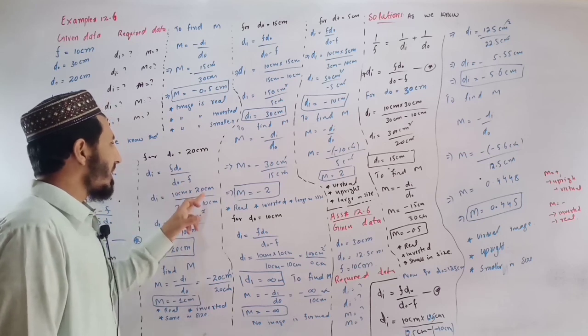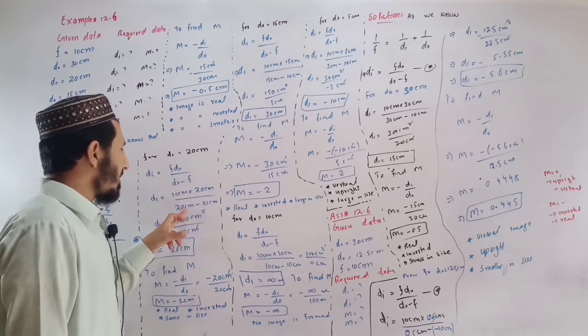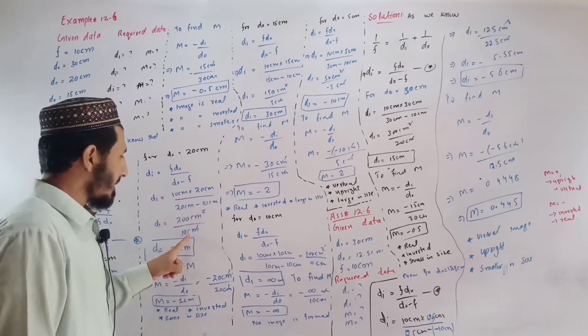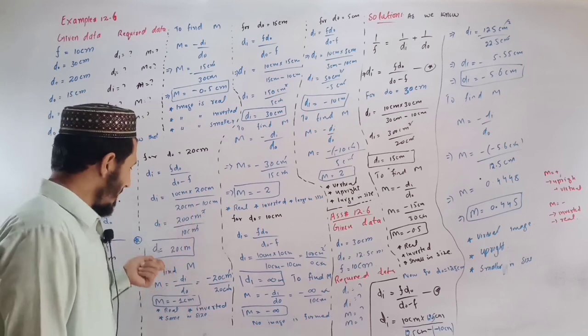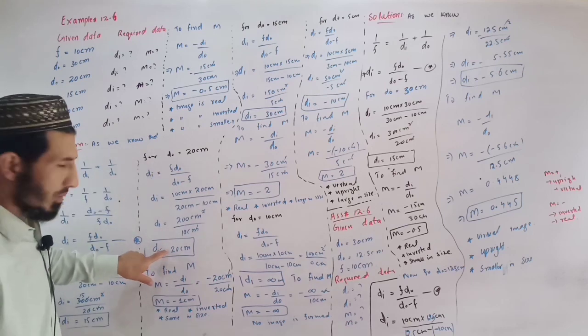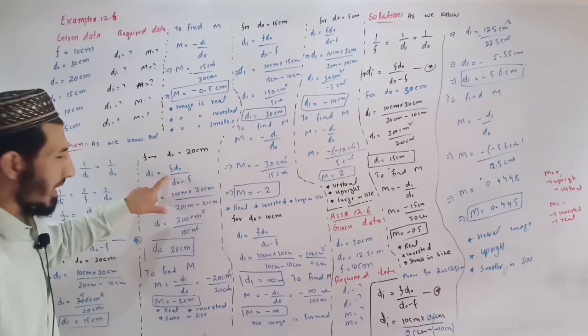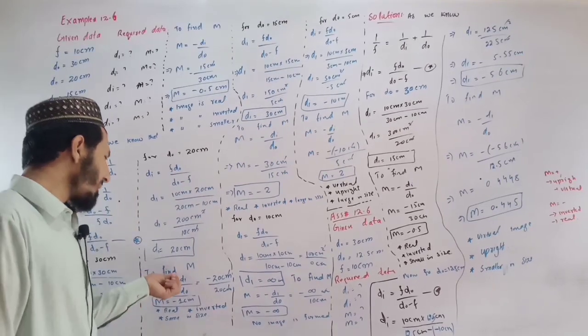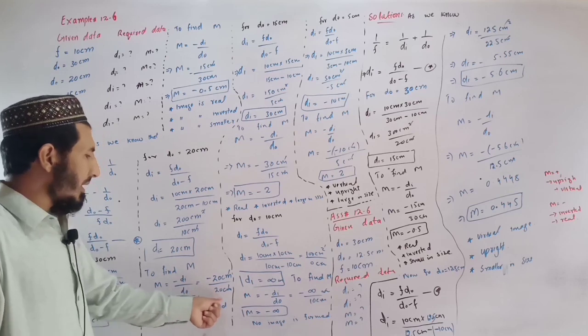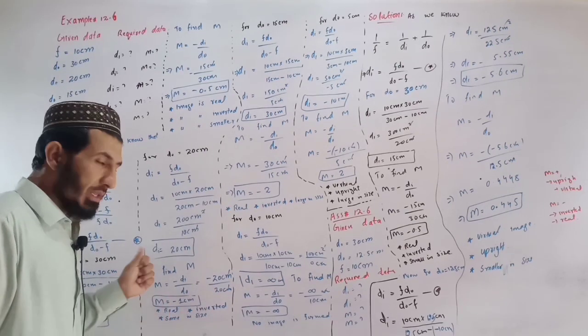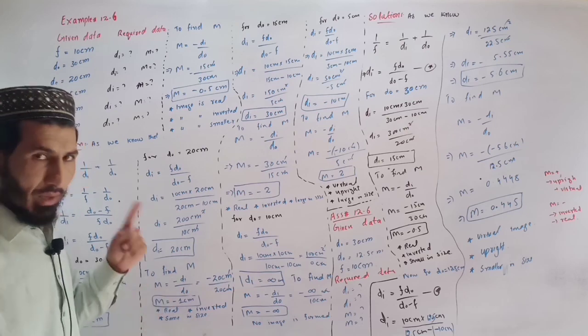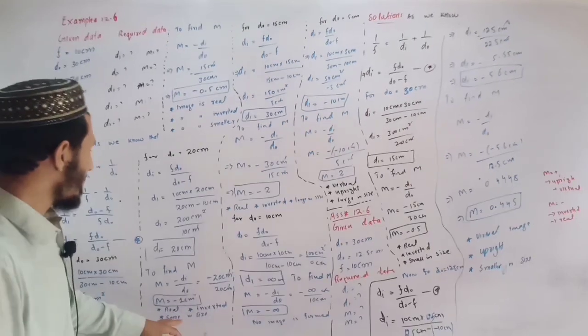With d0 of 20 cm, f is 10 cm. Di is 20 cm. We see di and d0 are equal. This is the optical center. M equals minus di divided by d0, minus 20 divided by 20, then minus 1. The image is real, the same in size.